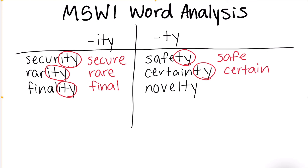And what about novelty? Our suffix was T-Y, and our base word was novel. This week's skill is just identifying what the base word is after looking at the suffix. Be sure to think about what you think the base word is and select the option that you know is a standalone word — that's what base words are. Thanks for watching this week's video. Bye!